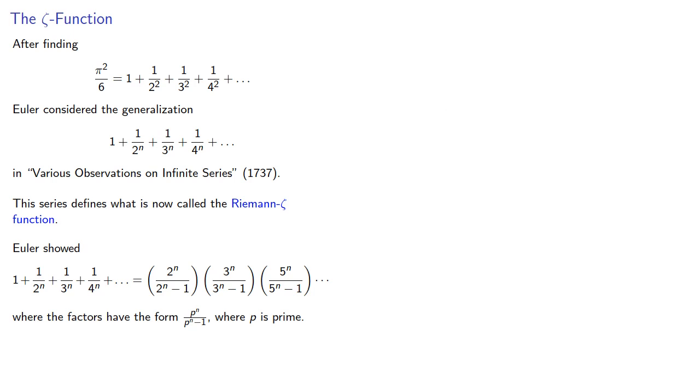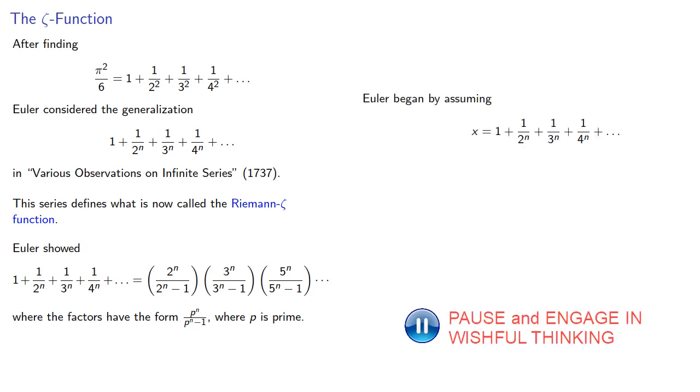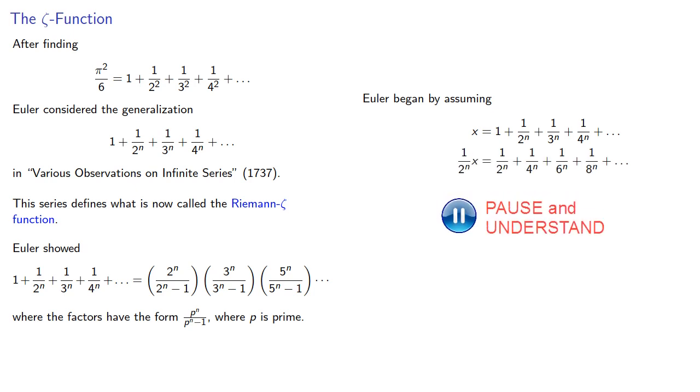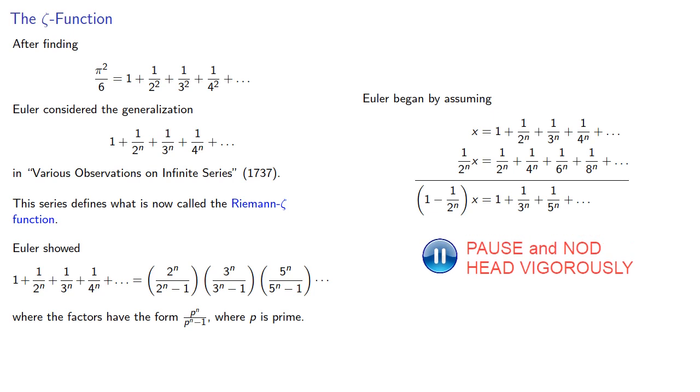To prove this, Euler assumed the series had some value x. Now if we multiply both sides by 1 over 2 to the n, then we get the modified series. And now we can subtract to get the result.